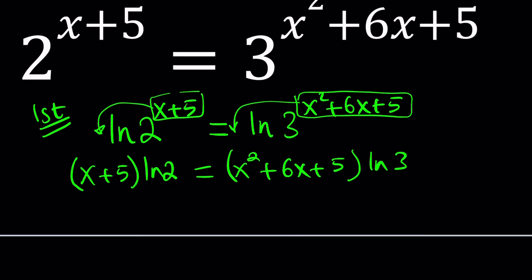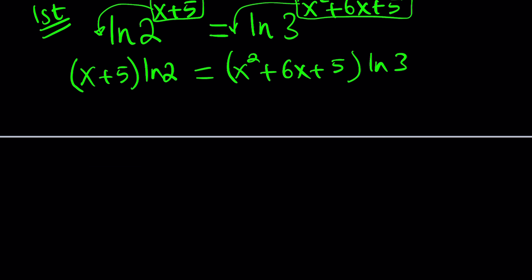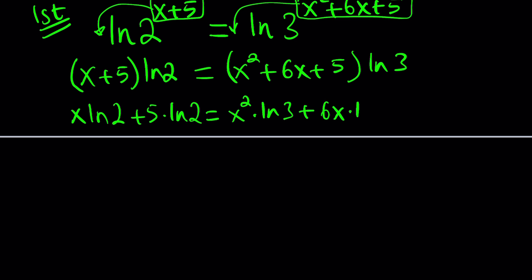So let's go ahead and solve this problem. We have x's on one side and x squared on the other side. So why don't we go ahead and distribute everything? We get x times ln 2 plus 5 times ln 2 is equal to x squared times ln 3 plus 6x times ln 3 plus 5 times ln 3. This is going to turn into a quadratic equation, because of x squared. Of course, it's going to be quadratic in x because that's the only variable, and everything else is a constant.